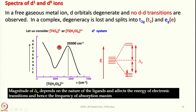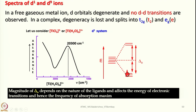I have given a typical spectrum here and am discussing the examples of hexachlorotitanate(3−) and hexaaquatitanium(3+) — both are D1 systems because titanium is in the +3 state in both cases. If you look into the hexaaqua complex spectrum, it shows an absorption maximum around 20,300 cm⁻¹, which occurs because of the promotion of one electron from T2G to the EG level. The magnitude of delta-O depends on the nature of the ligands and affects the energy of electronic transitions and hence the frequency of the absorption maximum.